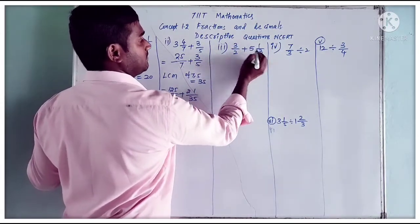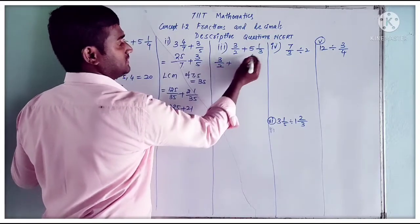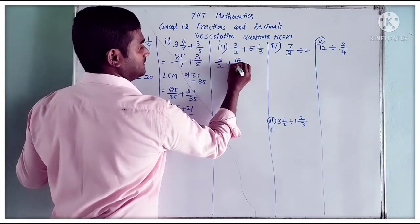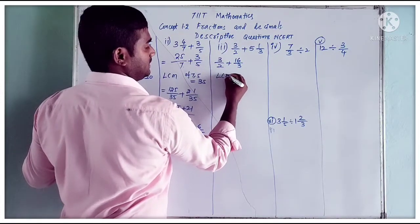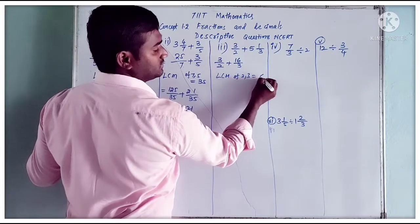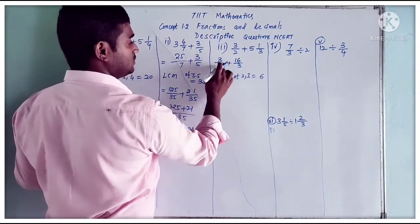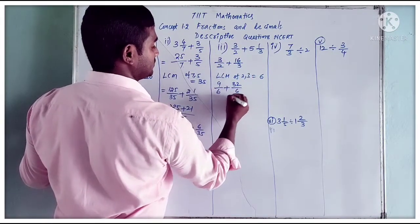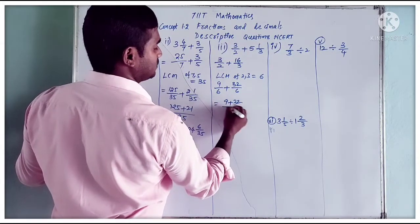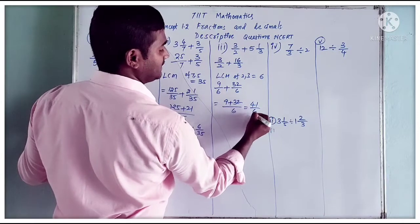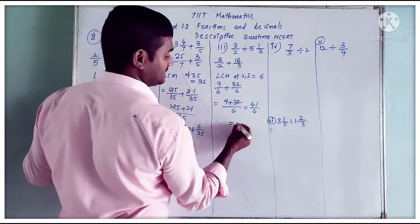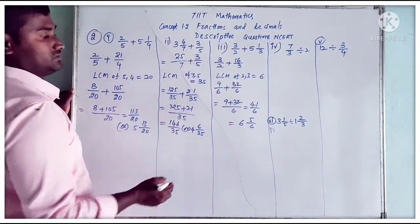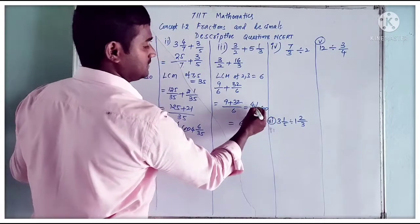Third part: 3 by 2 plus 5 and 1 by 3. Convert 5 and 1 by 3 to improper: 5 threes are 15, plus 1 equals 16 by 3. Different denominators, so LCM of 2 and 3 is 6. Multiply: 3 by 2 becomes 9 by 6, and 16 by 3 becomes 32 by 6. So 9 plus 32 equals 41 by 6, or in mixed fraction, 6 and 5 by 6. Either form is acceptable.